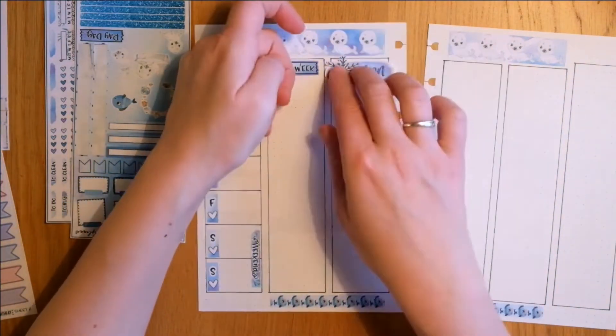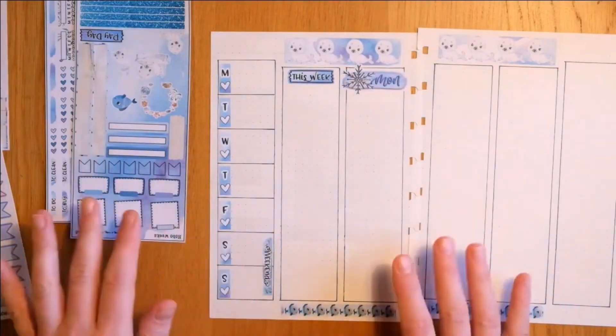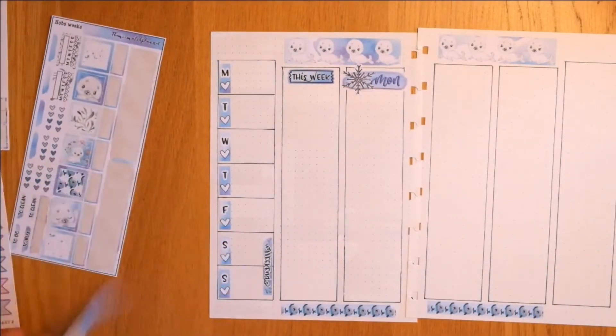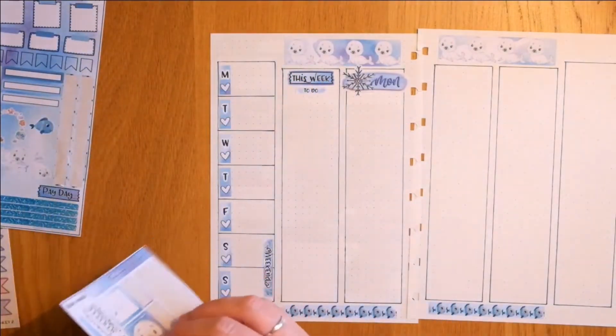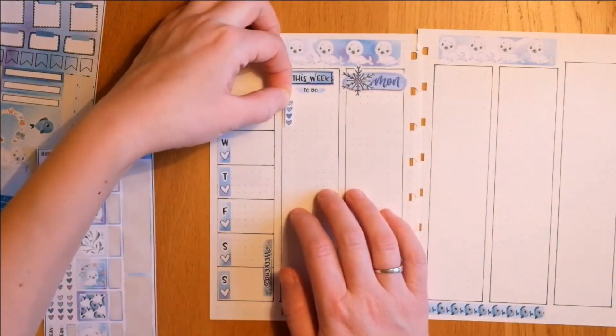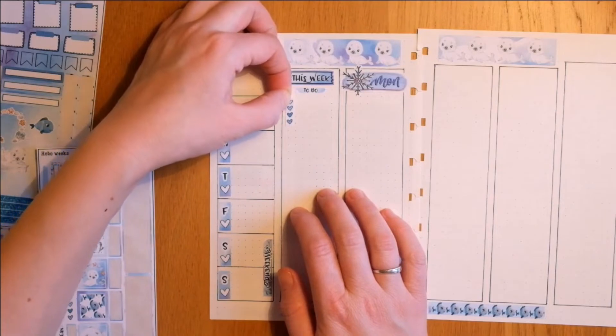And here's the Monday sticker from Planning with K sticker kit. It's a little bit bigger than the column itself, but I don't mind at all. I do like how it looks and the colors fit just right in.